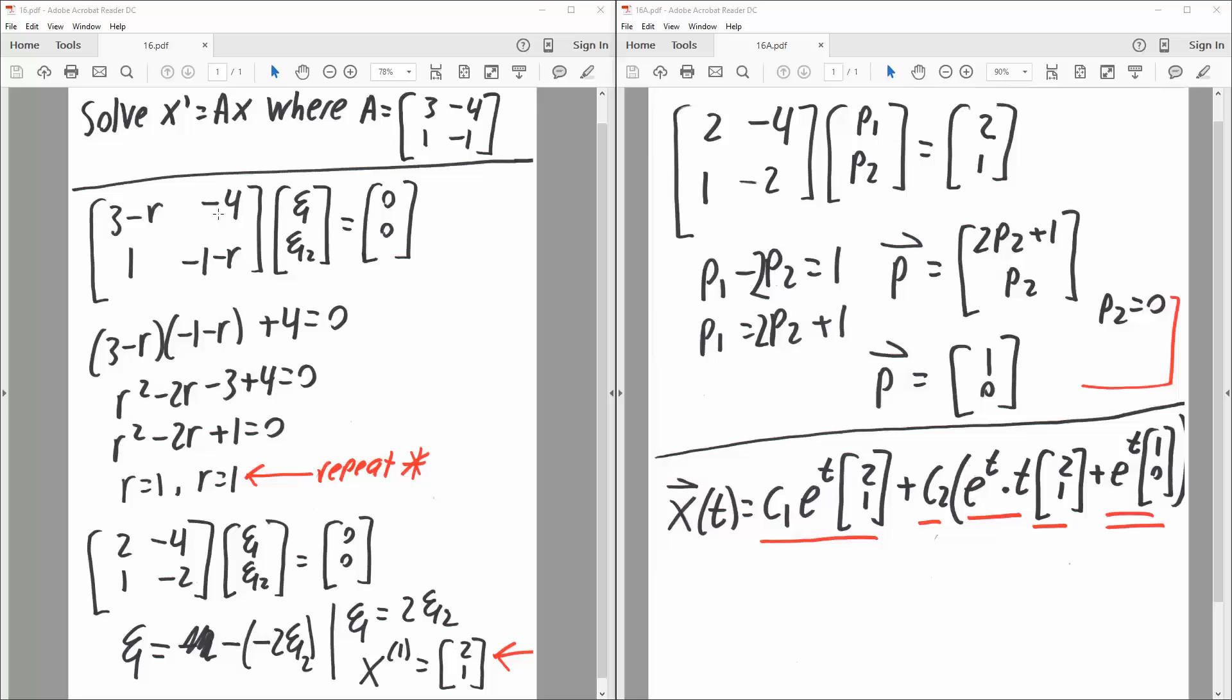And we'll just call this v1, v2, is equal to 0, 0, like this.